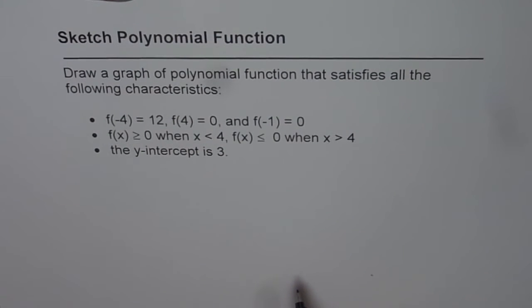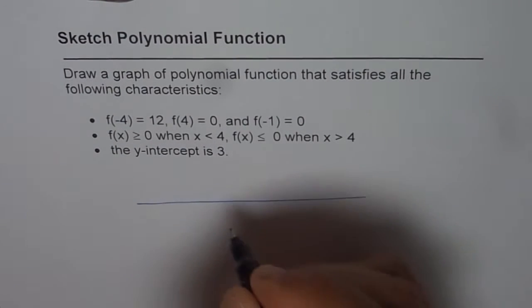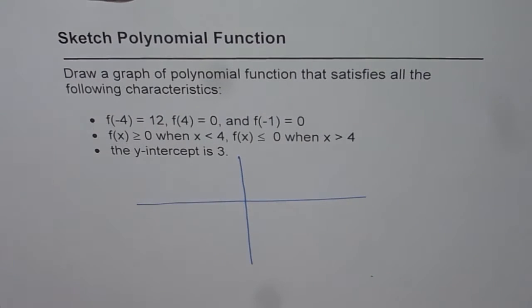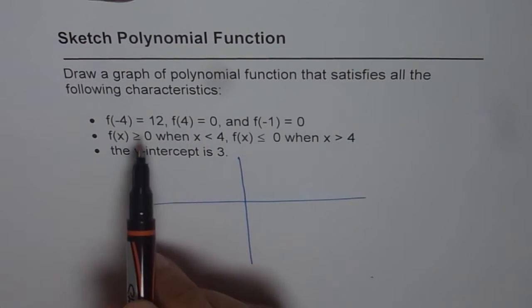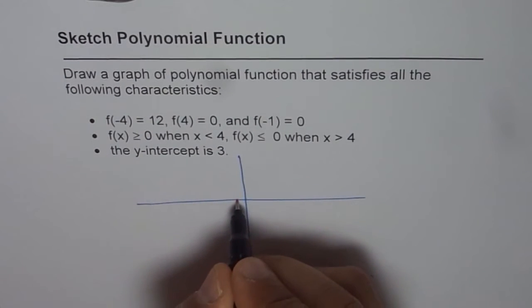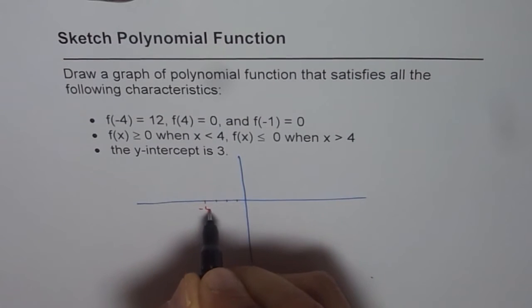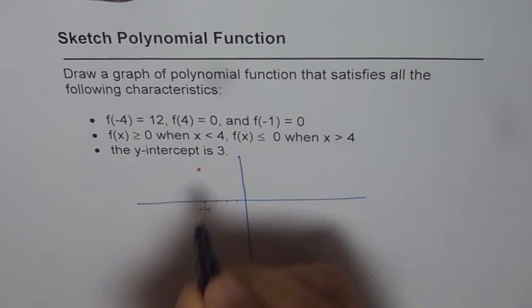Now, to sketch a graph, we should analyze the parameters given to us — that is the best way. Let us say this is our coordinate plane. What we are given here is the value of the function at a few points. f(-4) = 12, so let us mark 1, 2, 3, 4 — this is minus 4, and the value is 12. Let this be the point at 12.